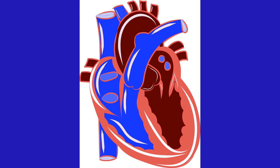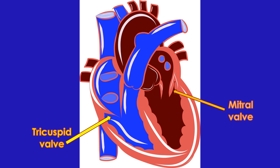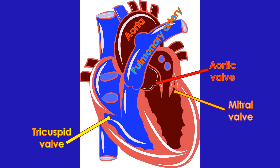The walls between the chambers are the tricuspid valve between right upper and lower chambers, and mitral valve between left upper and lower chambers. Aorta is the great vessel carrying oxygenated blood to the body, arising from the left ventricle. Pulmonary artery carries blood to the lungs for oxygen enrichment from the right ventricle. The valve between the left ventricle and aorta is called aortic valve, and that between right ventricle and pulmonary artery, the pulmonary valve.